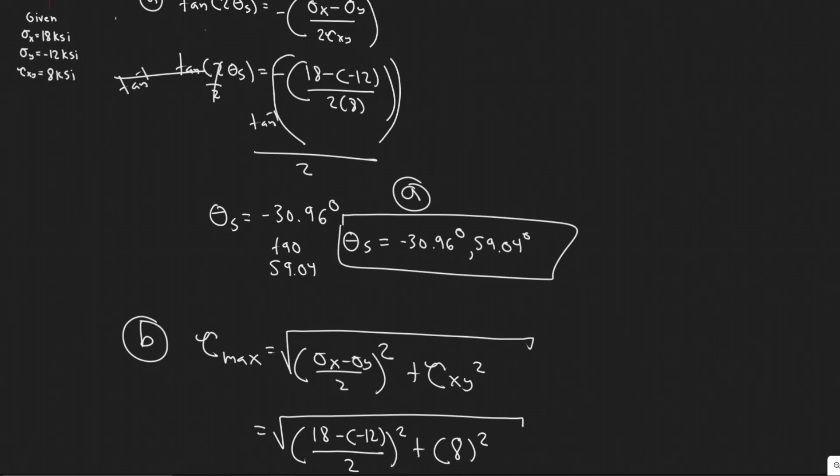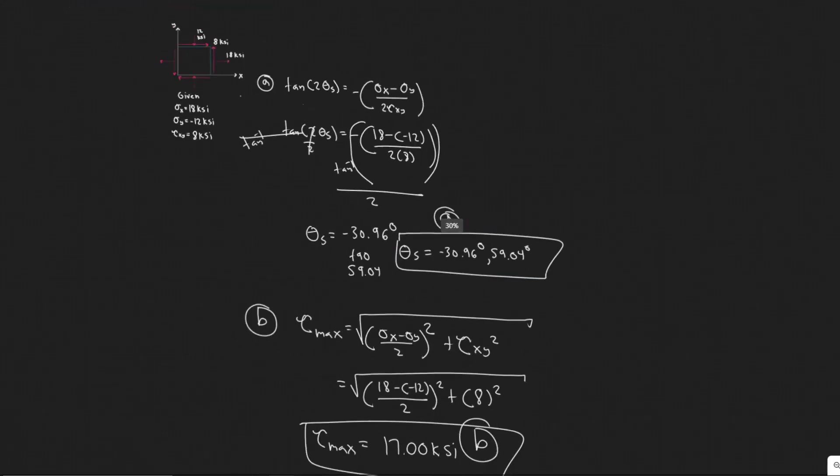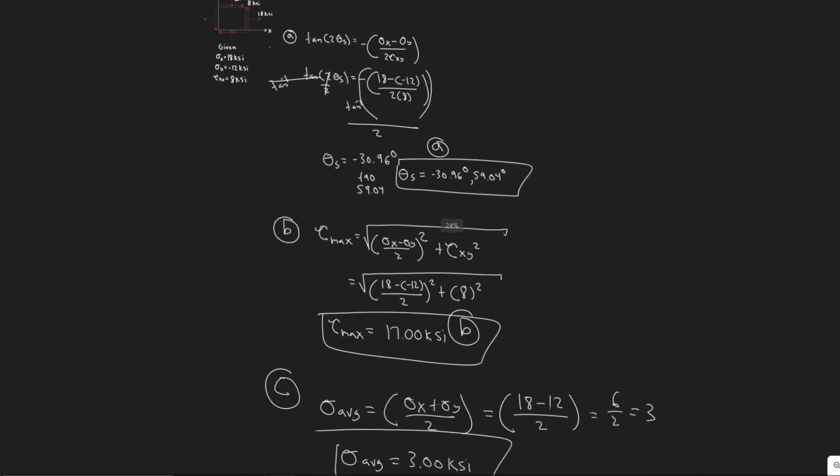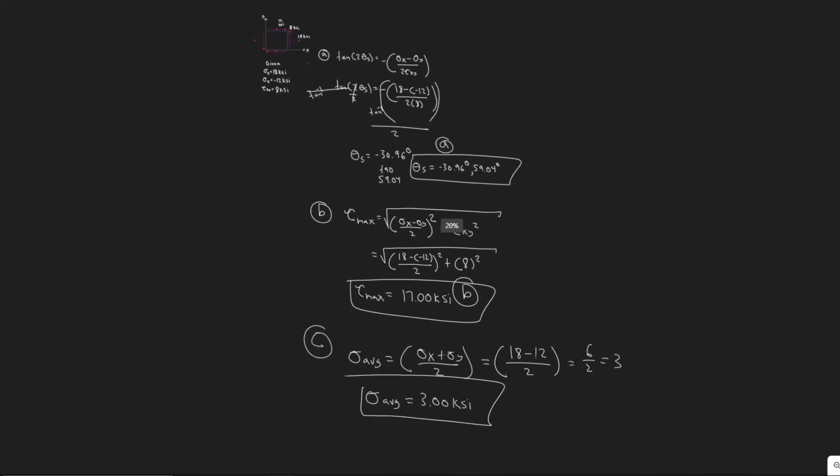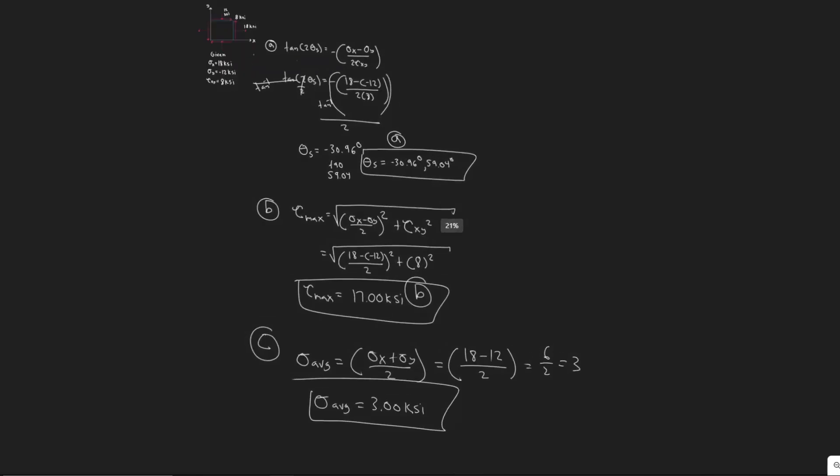The maximum in-plane shearing stress is right here, 17 ksi. And then this is going to be the orientation of the planes of maximum in-plane shearing stress. You got to know that they're 90 degrees apart, so you just add 90, and you can write your answer as two different ones. These are going to be your answers. Hopefully you found this video useful.